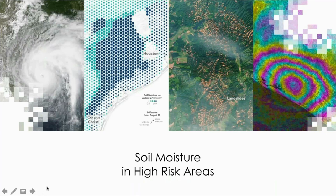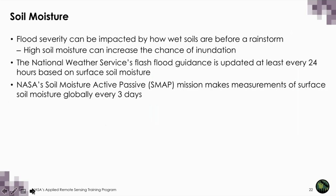Next we'll discuss assessing soil moisture as another indicator to help determine areas at risk for flooding. Flood severity can be impacted by how wet soils are before a rainstorm. If we know that soils are near saturation and a large rainstorm is moving in, we can predict that area might be at risk for flooding. High soil moisture can increase the chance of inundation, and the National Weather Service Flash Flood guidance is updated at least every 24 hours based on surface soil moisture. There's a NASA satellite called SMAP — Soil Moisture Active Passive — that makes measurements of surface soil moisture globally every three days.